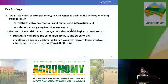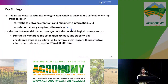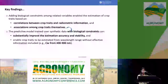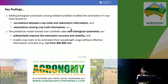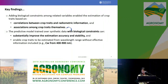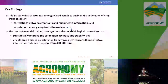Here are the key findings. First, adding biological constraints among related variables enables prediction based on both the relationship between crop traits and sensing data, as well as based on the associations among the crop traits themselves. Second, adding this biological constraint association can substantially improve prediction accuracy and also enable some crop traits to be estimated from spectral ranges without effective information in isolation.